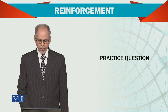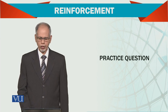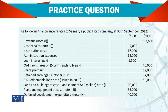Let's see a question. The following trial balance relates to Salaman. Normally, a trial balance has accounts listed — Revenue, note number one.